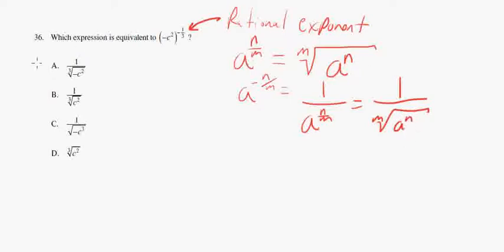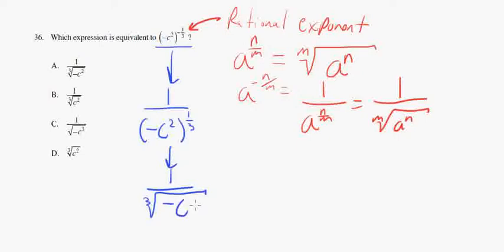Okay, so what we can do is take this and rewrite it so it is 1 over negative c squared to the one-third. Now, next thing we can do is, well, this is a rational exponent, so this can go to be 1 over the third root of negative c squared. Like that.